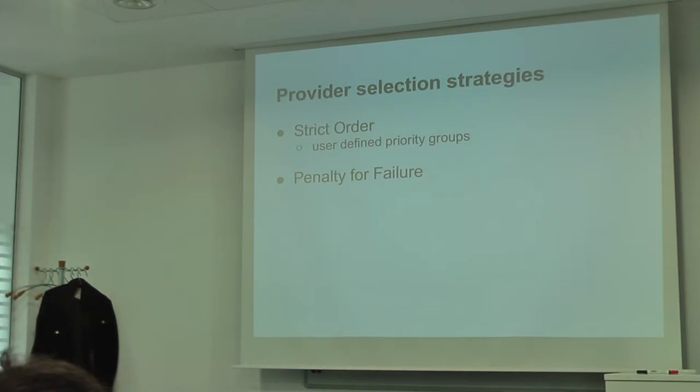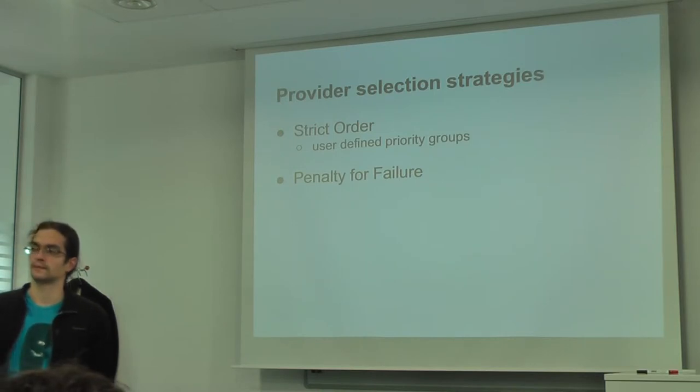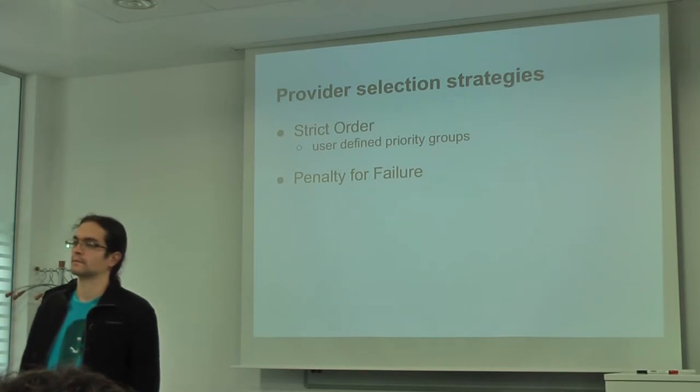For now, we have two strategies in Conductor. The first is strict order, and with strict order, a new resource is prepared in Conductor, which is the user-defined priority groups. So the user has the option to define their own priority groups and define strict ordering of the provider accounts. And the other one is penalty for failure, which penalizes provider accounts for failures. The question on the strict order - this is system-wide, the admin sets the same ordering across the system, but not each user getting their own, right?